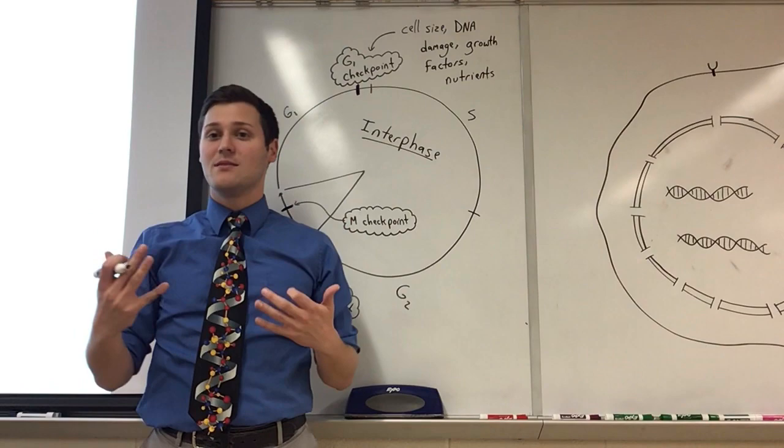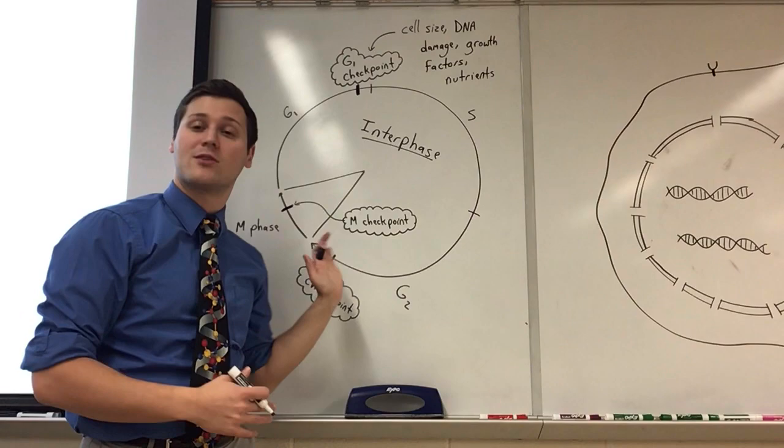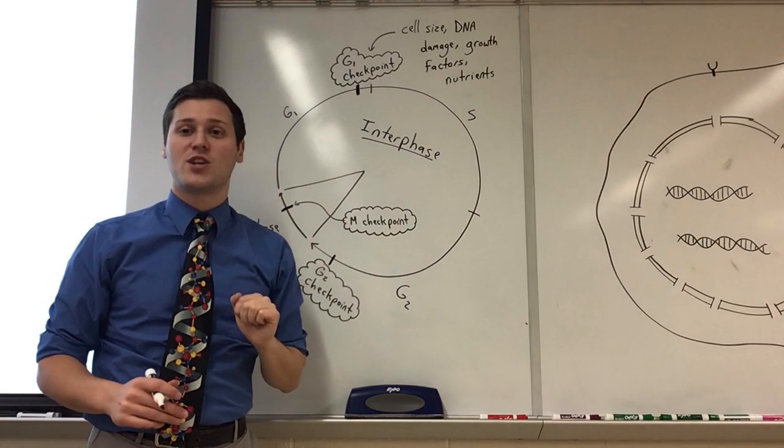we also have to check for nutrients. The cell cycle is costly in terms of nutrients. So we have to make sure that we have nutrients, enough nutrients to progress all the way through the cell cycle. So if it has all those things, then great, we progress past the G1 checkpoint.